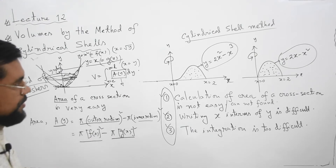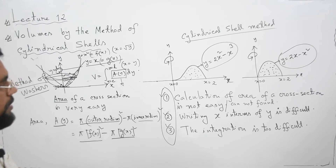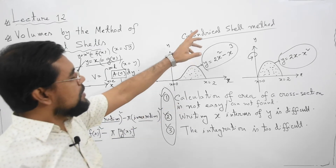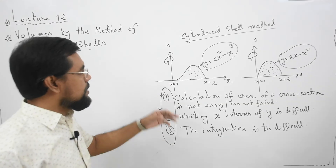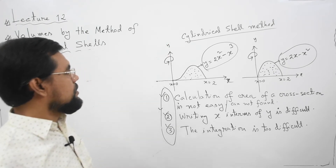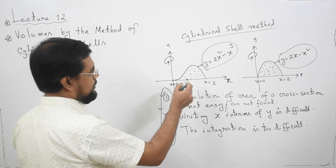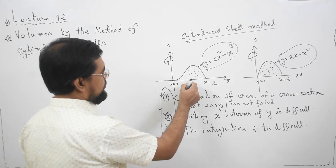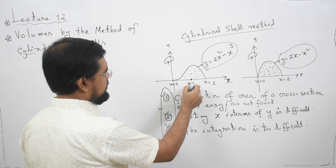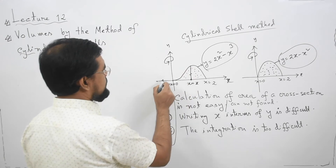To handle these types of problems and calculate the volume of a solid of revolution, there is one technique called the cylindrical shell method. Let us try to understand what the shell method or cylindrical shell method is. If you consider a cylindrical shell at x = x at a given point, this cylindrical shell will look like a thin hollow cylinder.